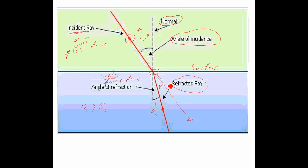If we reverse this — light going from the more dense material up into the less dense material — it still bends, but now away from the normal. So going from less dense to more dense gives a decrease in the angle of the refracted light, and going from more dense to less dense gives an increase in the angle of the refracted light.